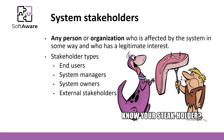Another important thing to note is what a system stakeholder is. Basically, it can be any person or organization who is affected by the system in some way and who has a legitimate interest. It includes users, system managers, system owners, or external stakeholders. For example, if you consider the university academic system, the final users are students and lecturers. System managers could be people from student departments, technical support would likely be provided by the Department of Information Technologies, and some system reports could be provided to government institutions — in other words, external stakeholders.